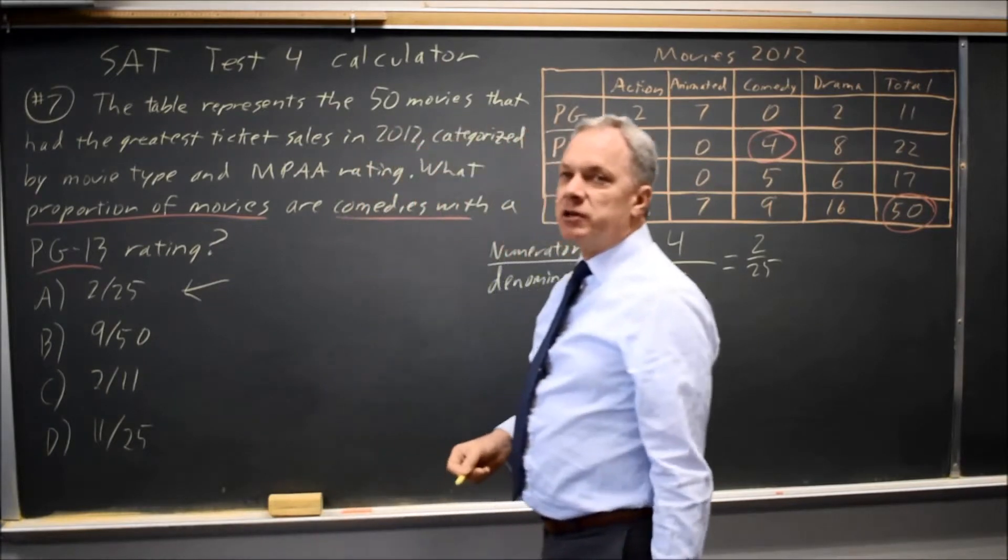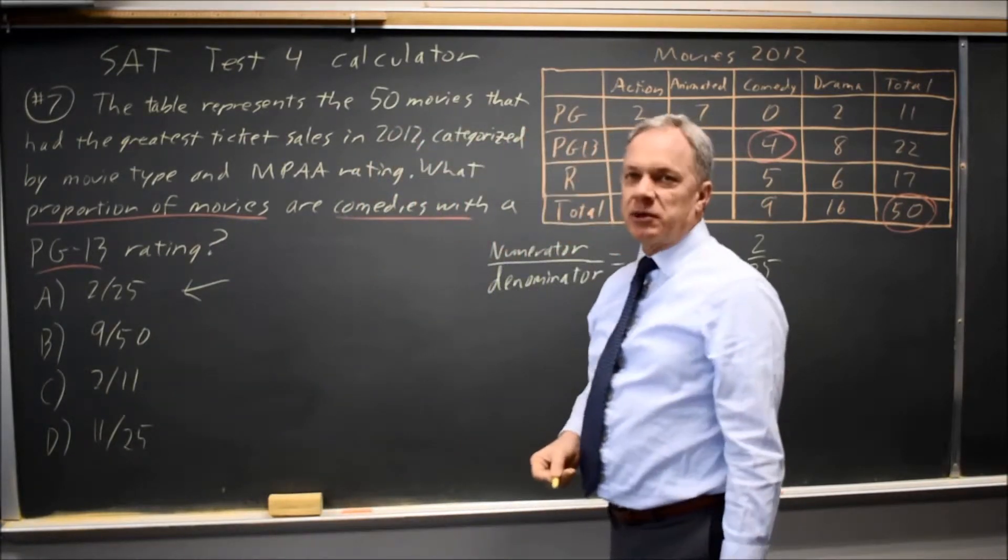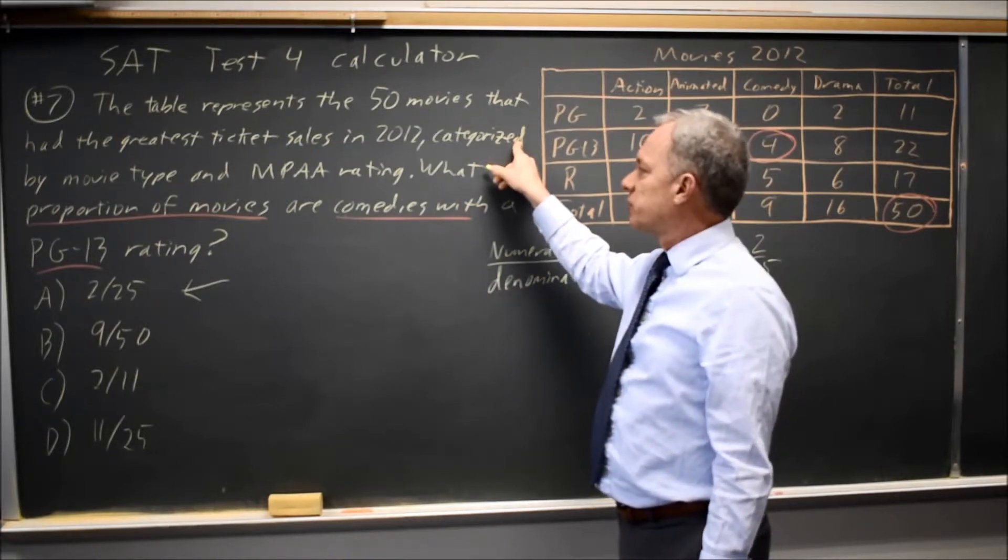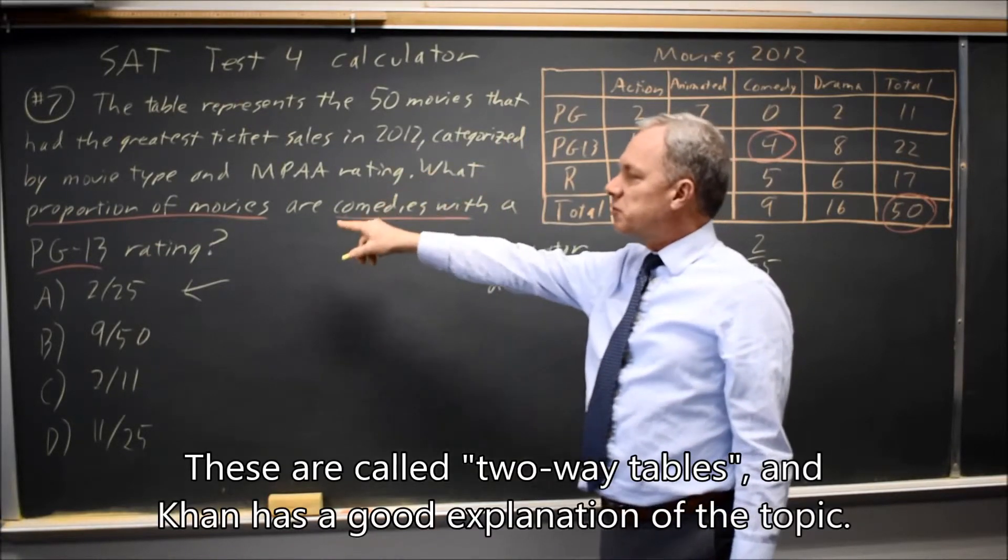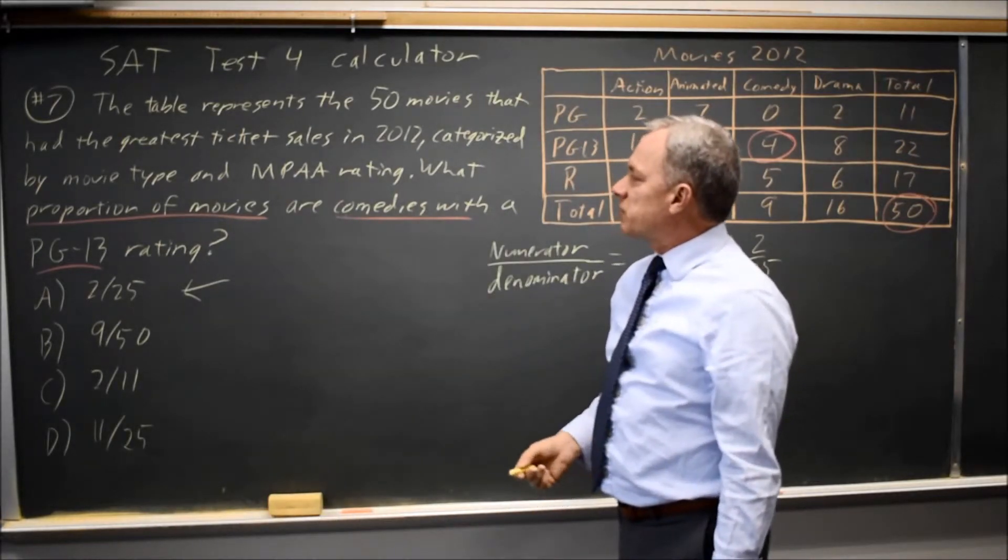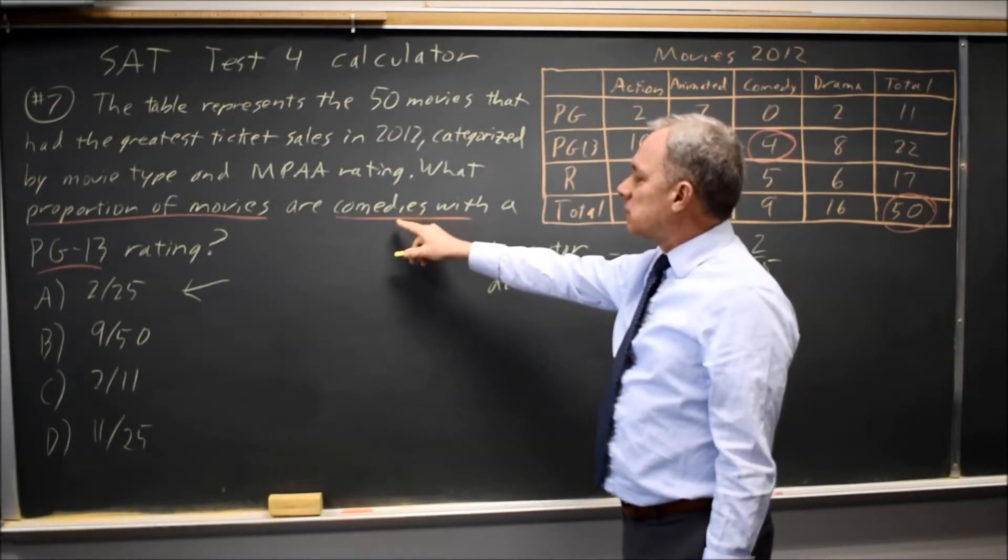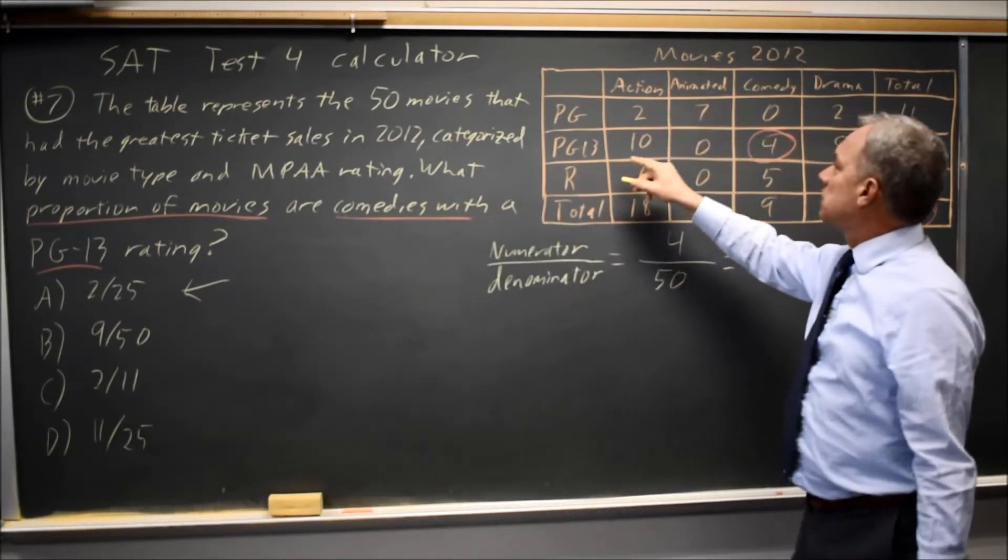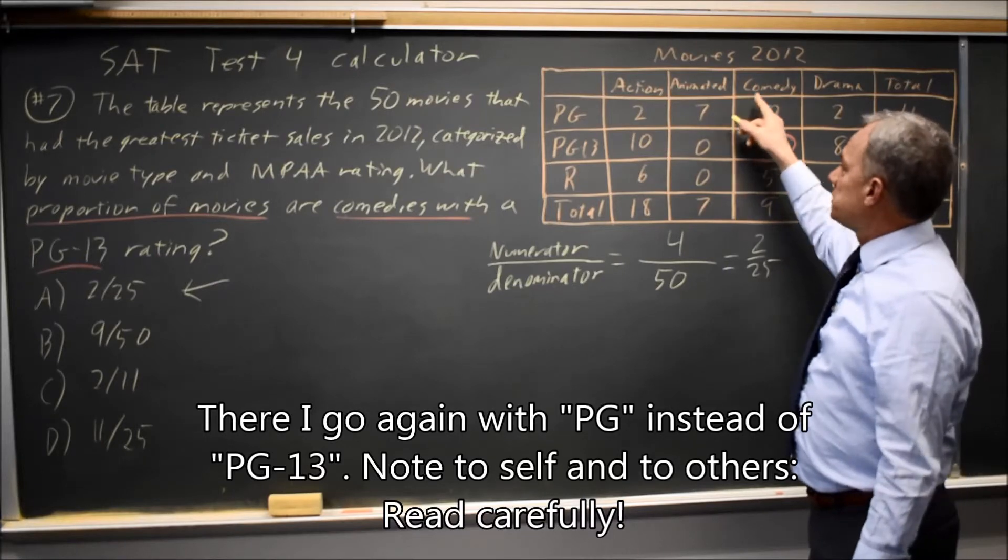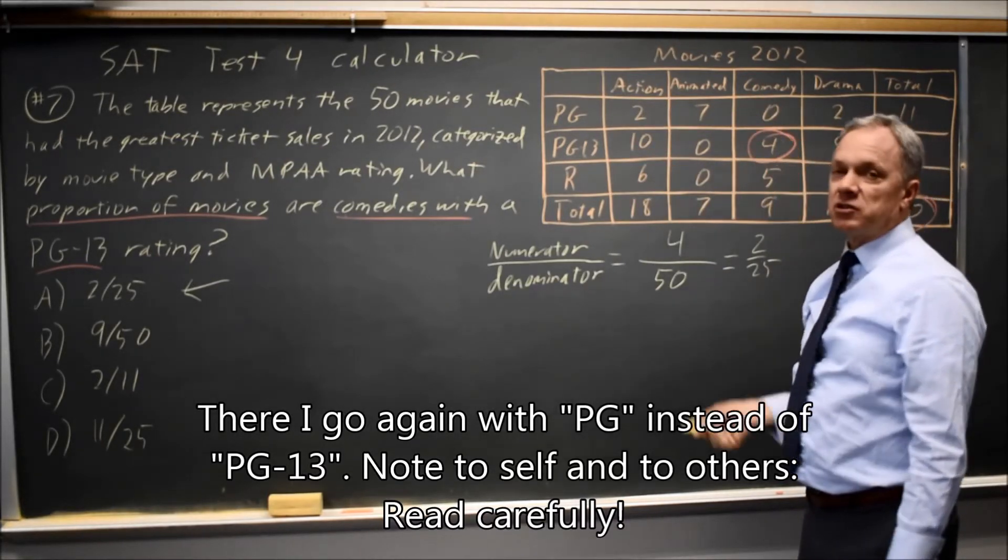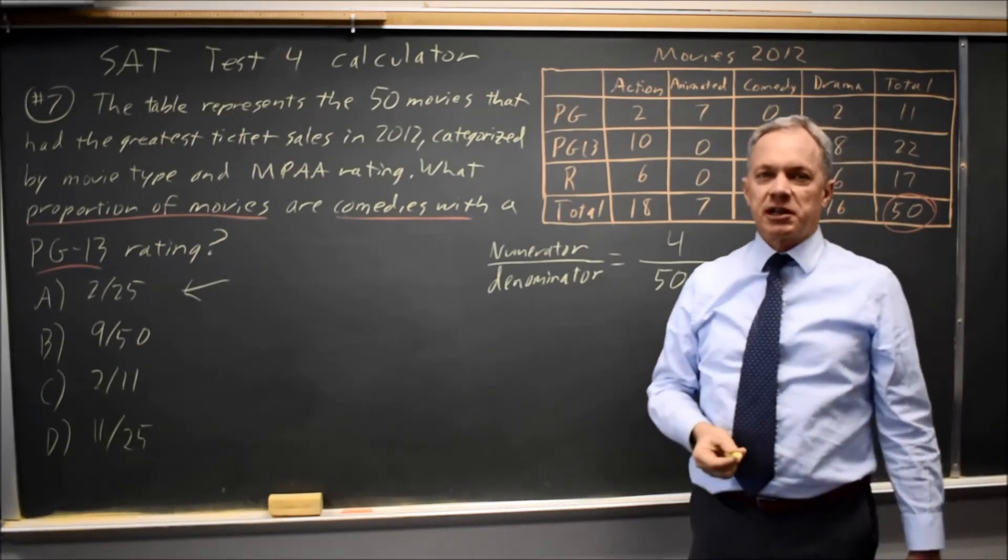I like to reread the question to make sure my answer matches their question, always, but especially for tables involving two categorical variables. The question was, what proportion of movies, and now that I've done it, I remember that that is, in fact, what I did. And of those, what proportion are comedies with PG-13? It wasn't comedy or PG, which would be this column combined with this row, it's just comedy with PG-13, which is only these four movies. So I found the correct answer.